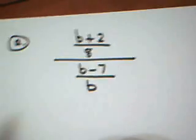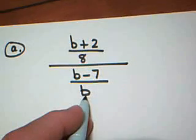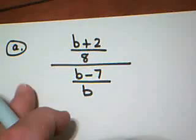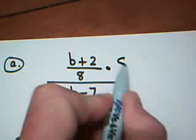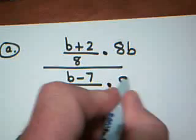So let's look at that in action. If I have this complex fraction, this denominator is 8, this denominator is B. My LCD would be 8B. So I multiply the top by 8B, and I multiply the bottom by 8B.